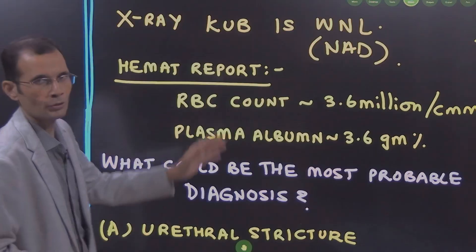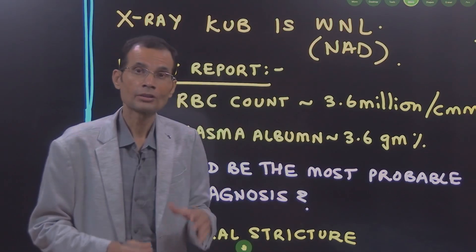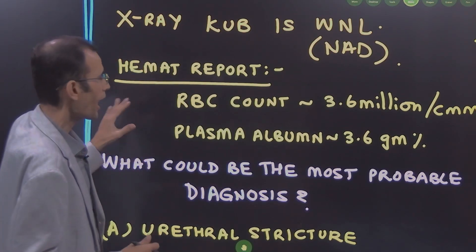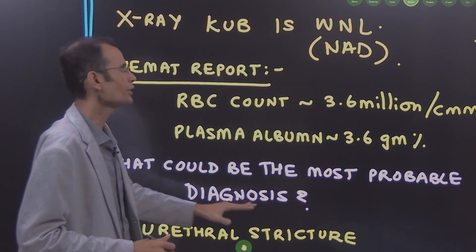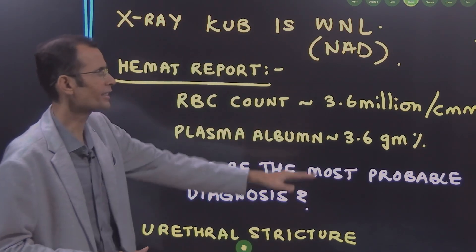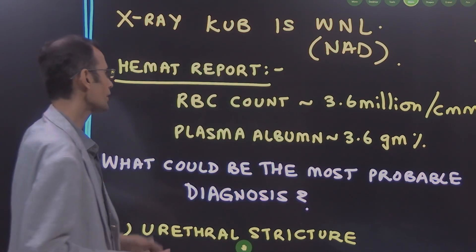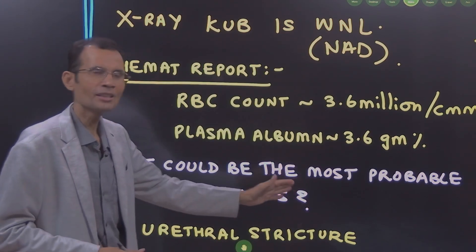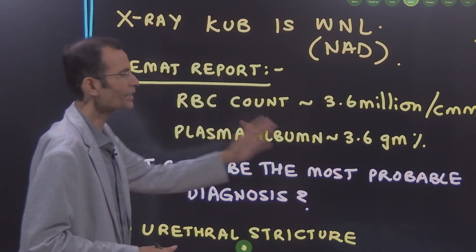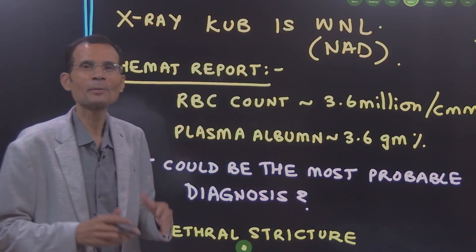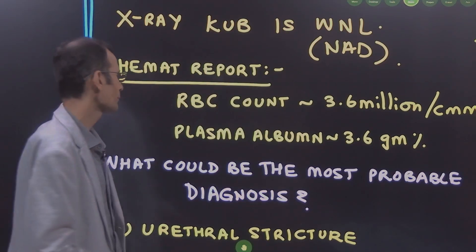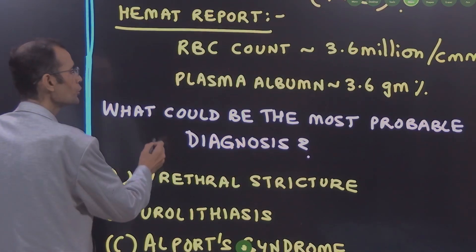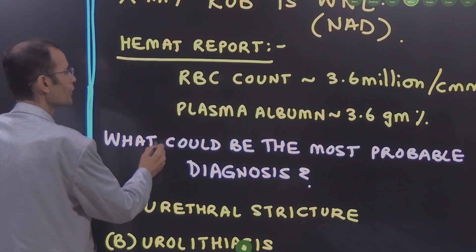The hematology report is important. RBC count is 3.6 million per cubic millimeter and plasma albumin is 3.6 grams percent. So, what could be the most probable diagnosis?